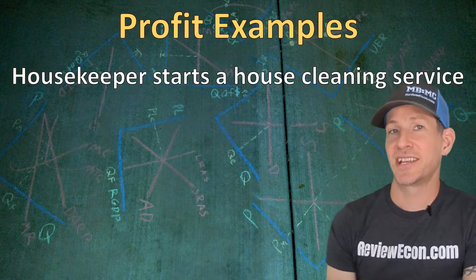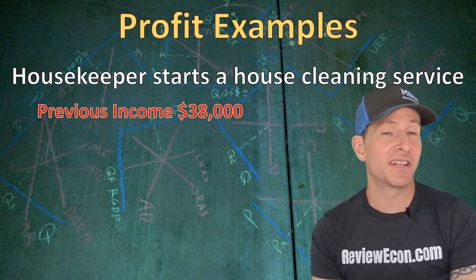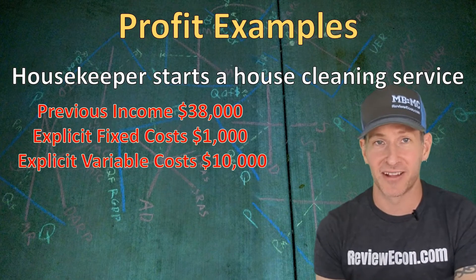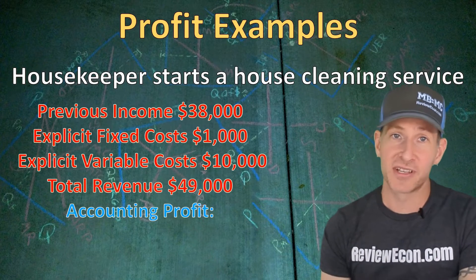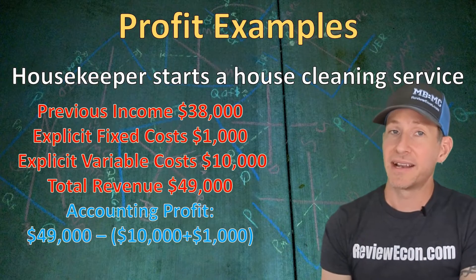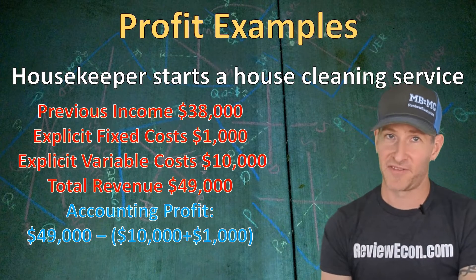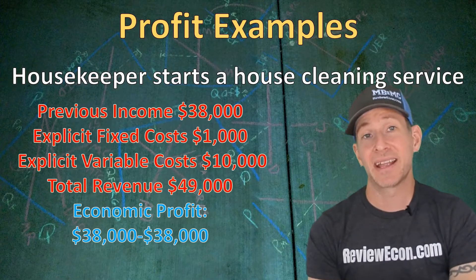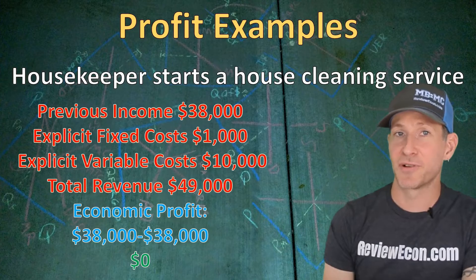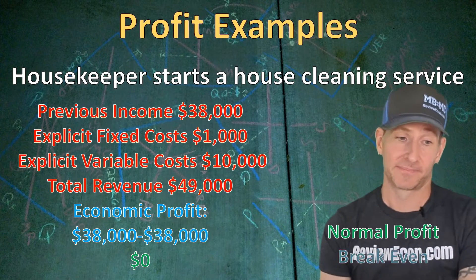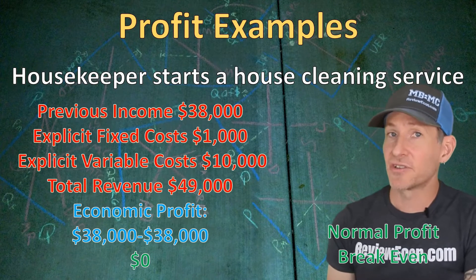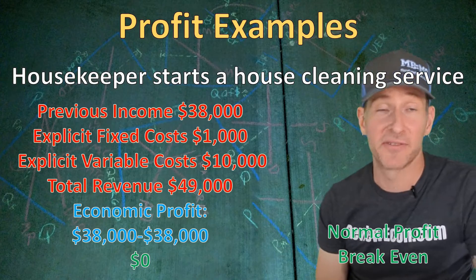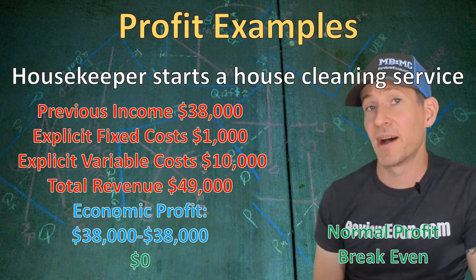Finally, a housekeeper quits to open a house cleaning service. Their previous income was $38,000, with explicit fixed costs of $1,000, variable costs of $10,000, and total revenue of $49,000. Accounting profit is $49,000 minus $11,000, equaling $38,000. Subtracting the $38,000 implicit cost gives $0 of economic profit — a normal profit, meaning they are breaking even. Breaking even isn't necessarily bad; it means accounting profit equals the next best alternative. Note that you could have both explicit and implicit variable and fixed costs, but if it's not in the question, it doesn't exist.